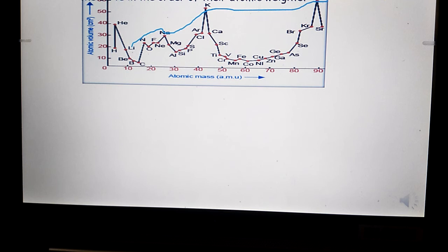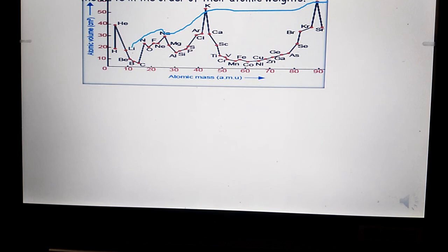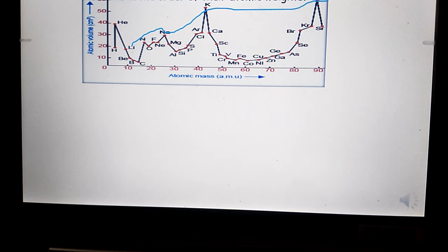The sky blue line indicates that lithium, sodium, potassium, and rubidium appear on the peak because of their greater atomic size.